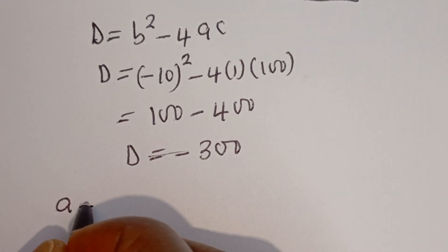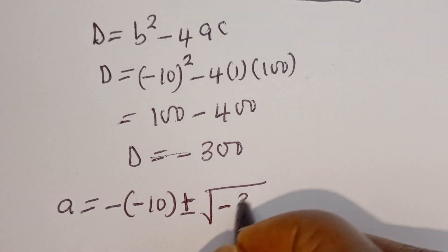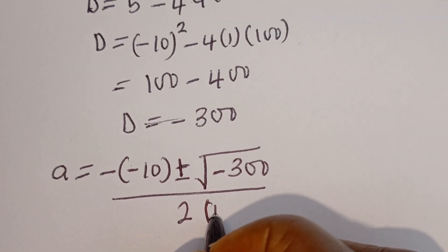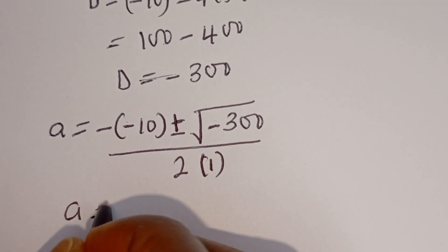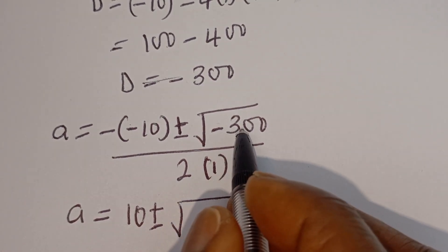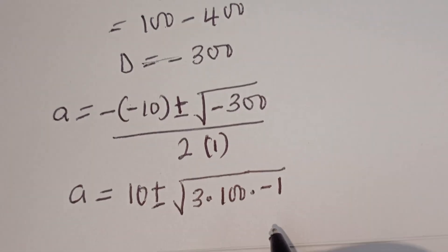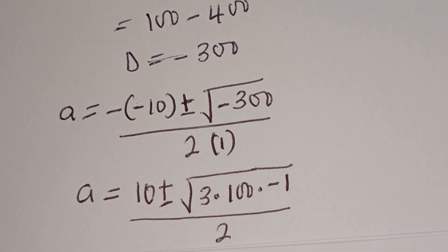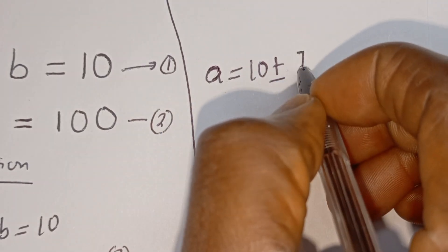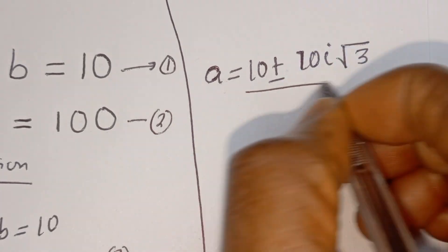So let's plug this in. We have a is equal to minus bracket minus 10, plus or minus square root of minus 300, divided by 2 multiplied by 1. A is equal to minus times minus 10, which is 10, plus or minus square root of minus 300. This can be written as square root of 3 multiplied by 100 multiplied by minus 1, divided by 2. The square root of 100 is 10, and square root of minus 1 is i.